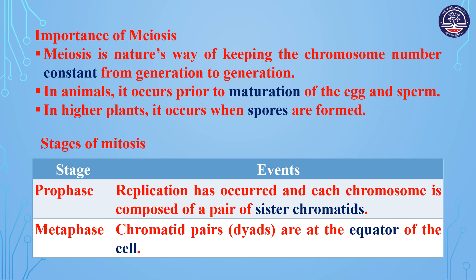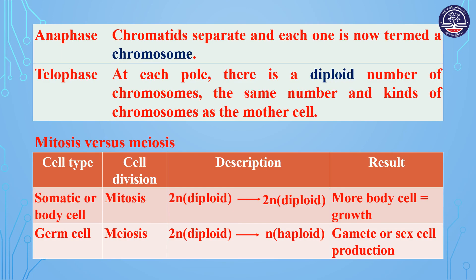Anaphase: chromatids separate and each one is now termed a chromosome.